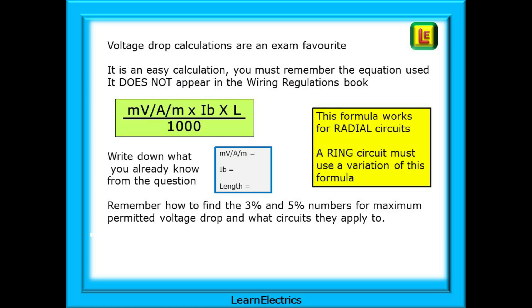The voltage drop calculations are an exam favourite. Practice them and improve your exam score. It is an easy calculation but you must remember the equation used. It does not appear in the wiring regulations book. Write down what you already know from the question. It helps to make things more understandable. And do remember how to find the 3% and 5% numbers for maximum permitted voltage drop and what circuits they apply to. Easy exam marks if you get it right. And you will only be asked questions on simple radial circuits. Ring circuits require a little extra calculation.